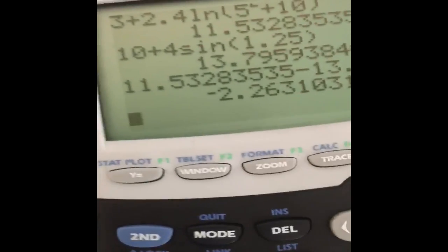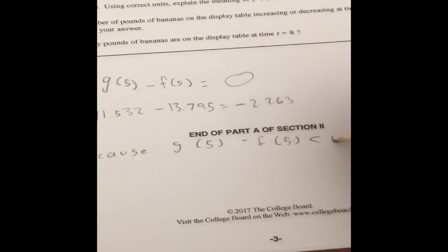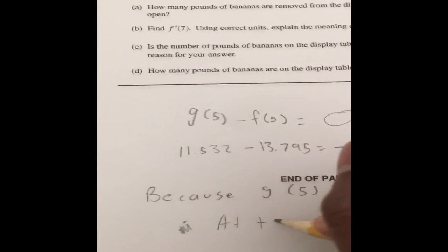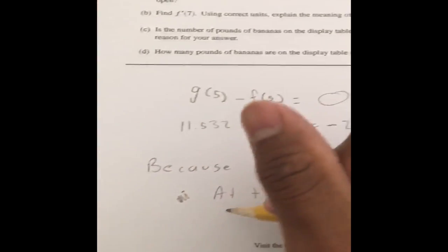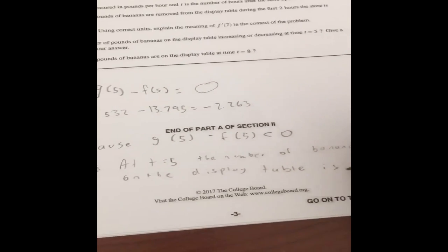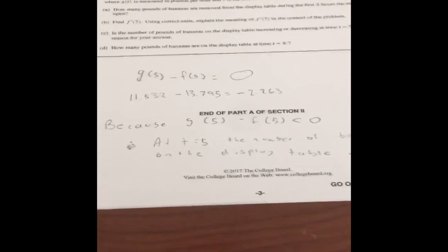When you subtract them, you get negative 2.263. Because g of 5 minus f of 5 is less than zero, we can conclude that at t equals 5, the number of bananas on the display table is decreasing.